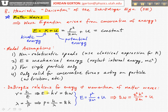We can rewrite these as E = ℏω, where energy equals Planck's constant divided by 2π times the angular frequency ω, and the momentum equals ℏk, where k is the wave number. This allows us to rewrite conservation of energy as: ℏω = E = ℏ²k² / 2m + U, which is kinetic energy plus potential energy.